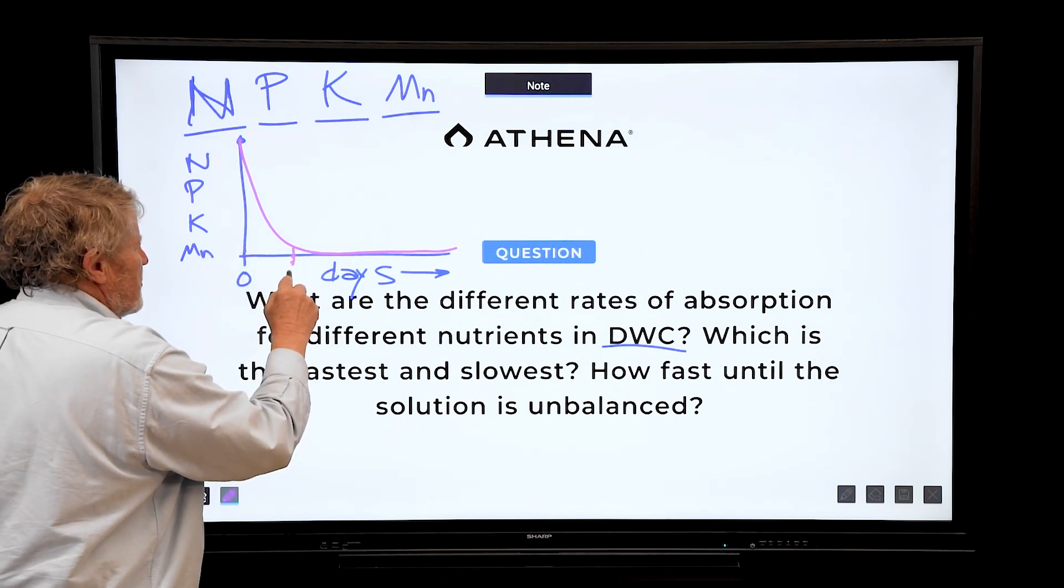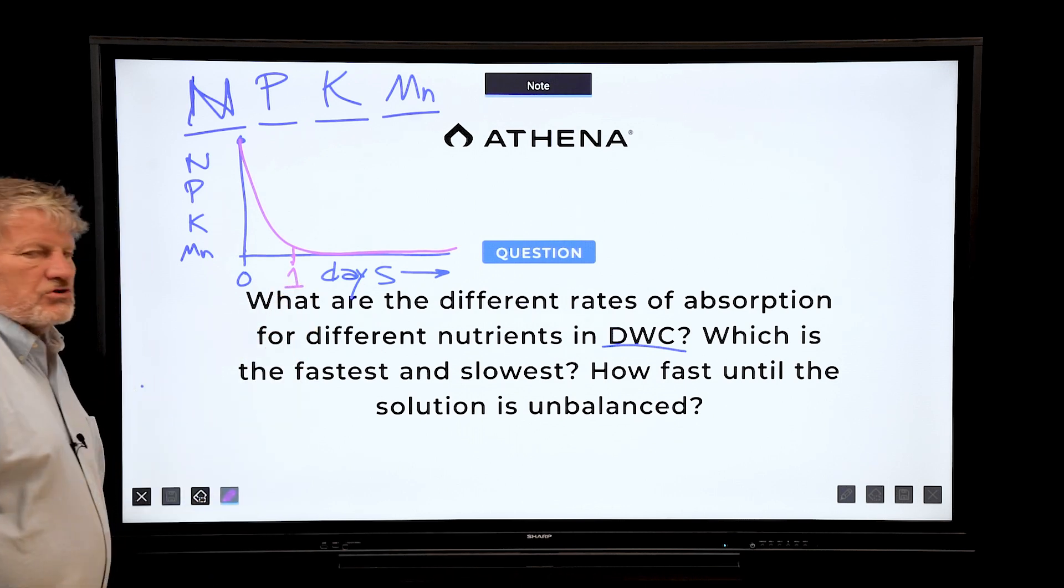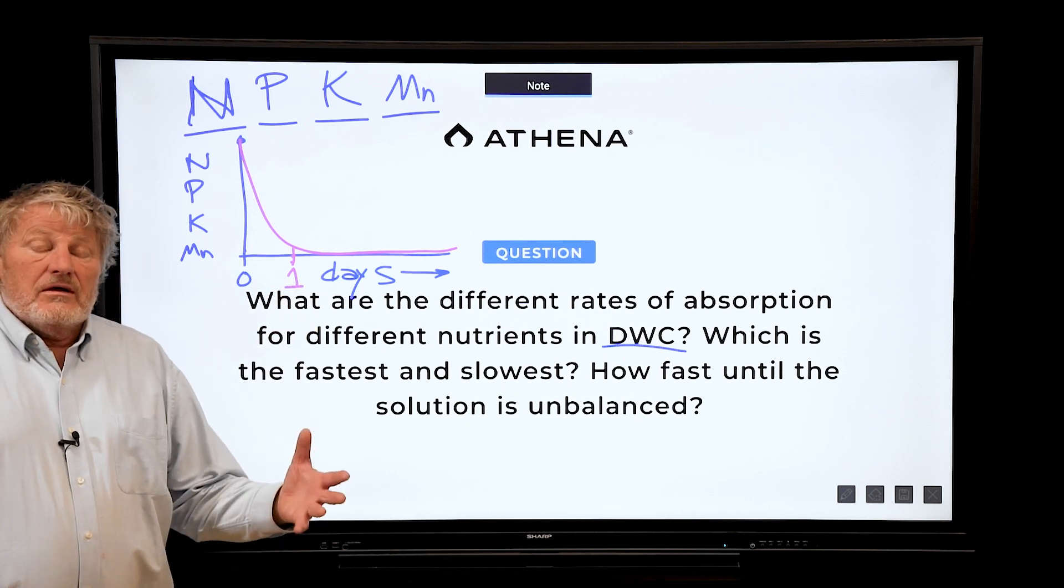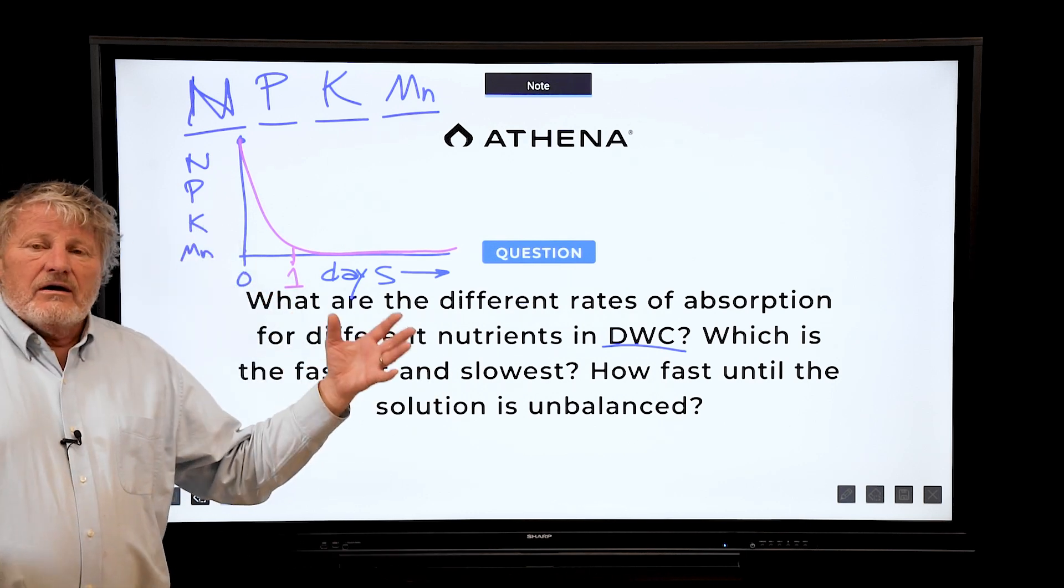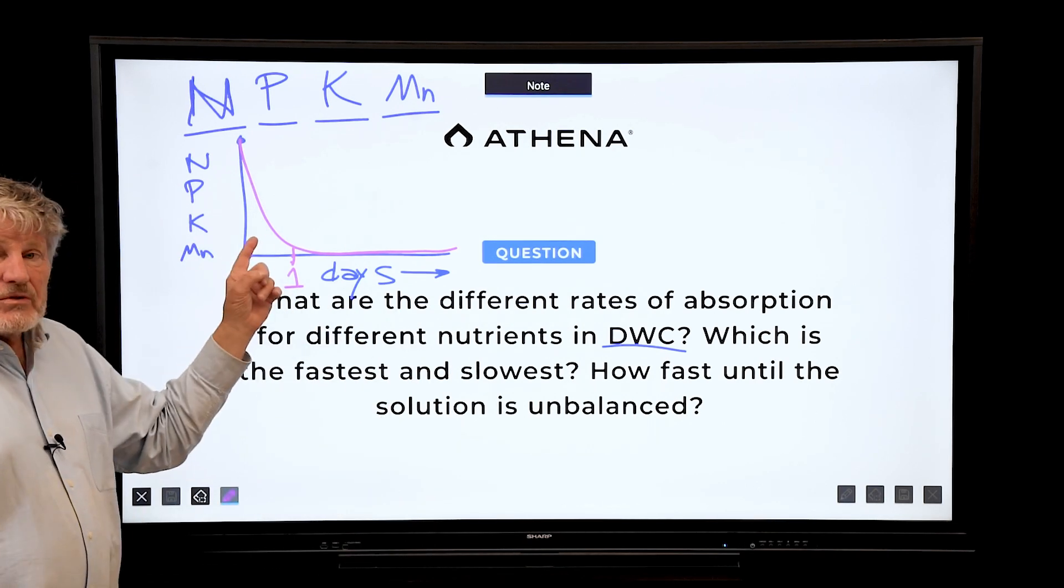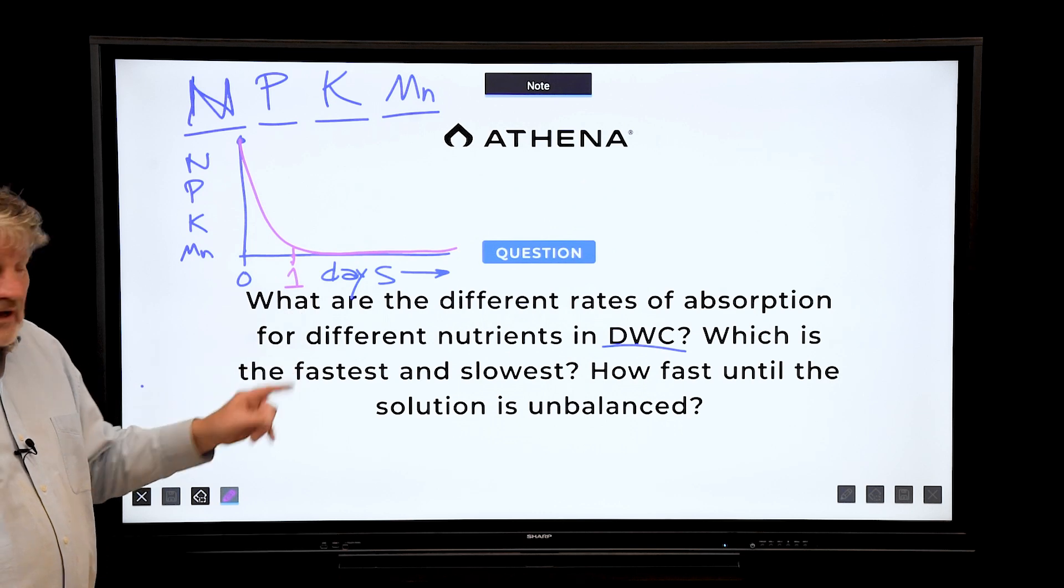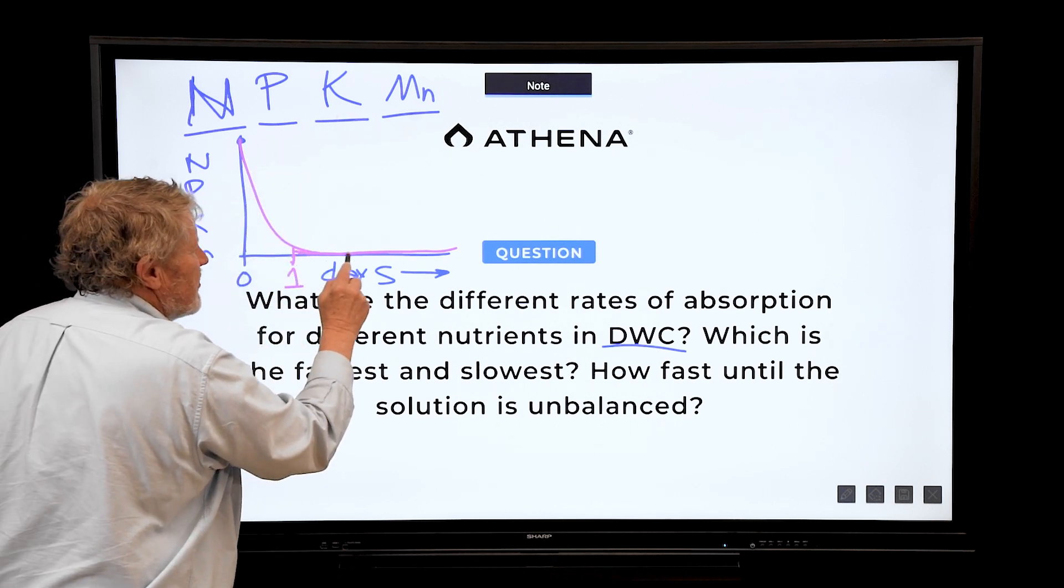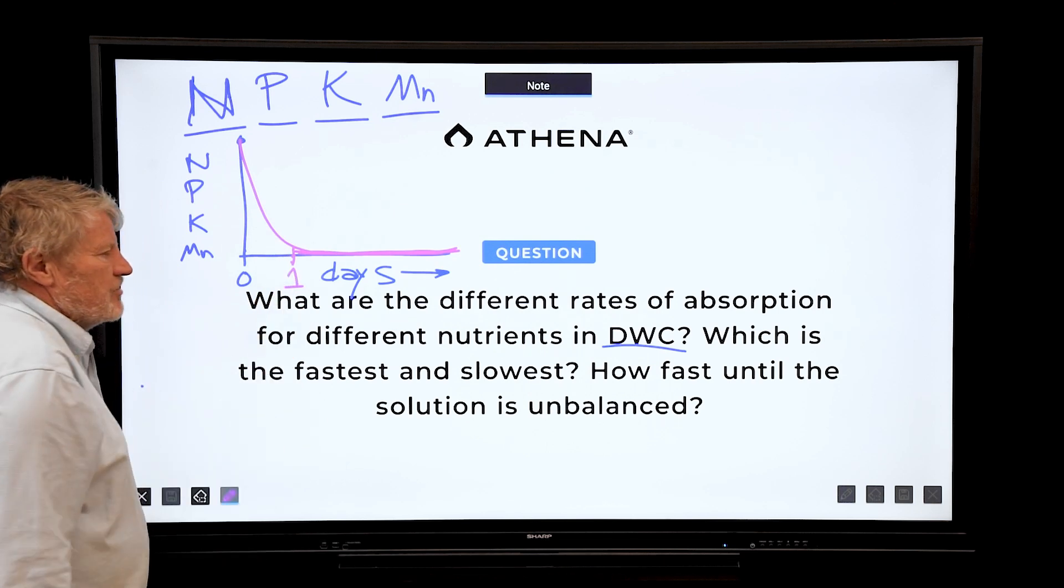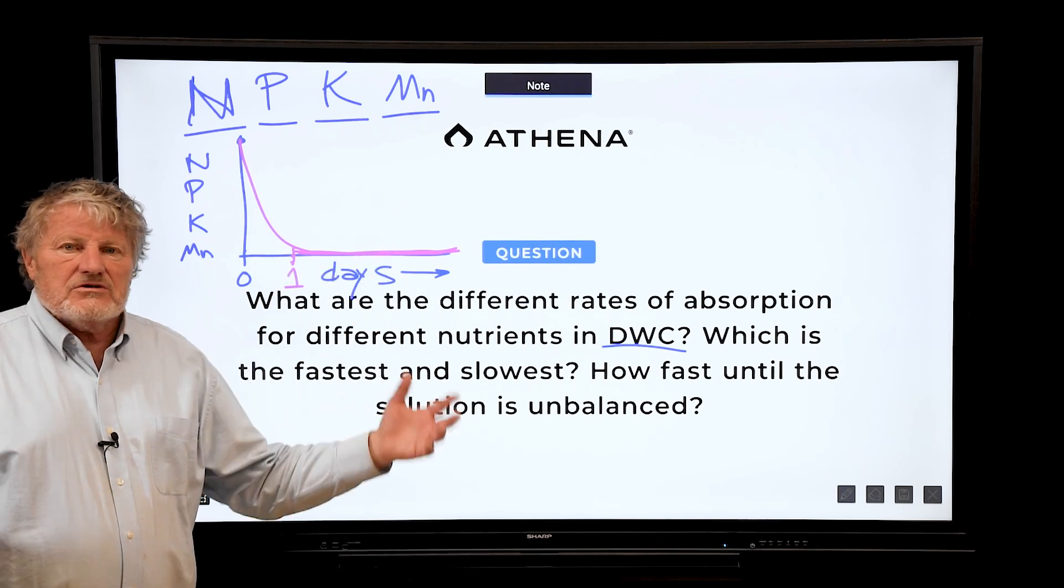They're very quickly removed depending on the volume of solution. This can be, I'm going to say one day and it looks like they're gone. You panic. Oh my goodness, these are at zero. So where do you think they went? They went into the plant where we want them. So these four elements, we want to maintain them at very low levels in the nutrient solution because the plant takes them up so fast.